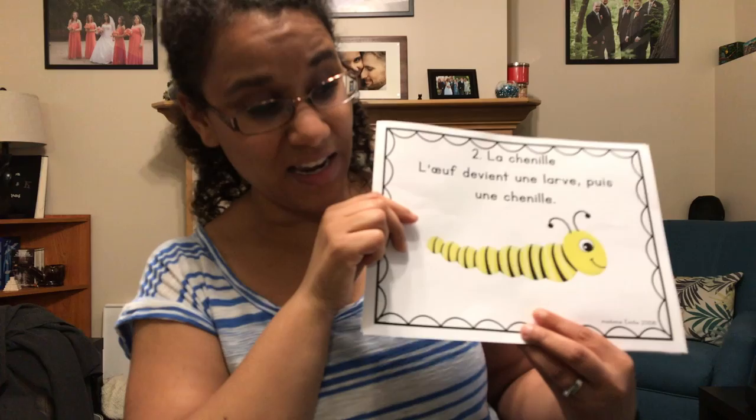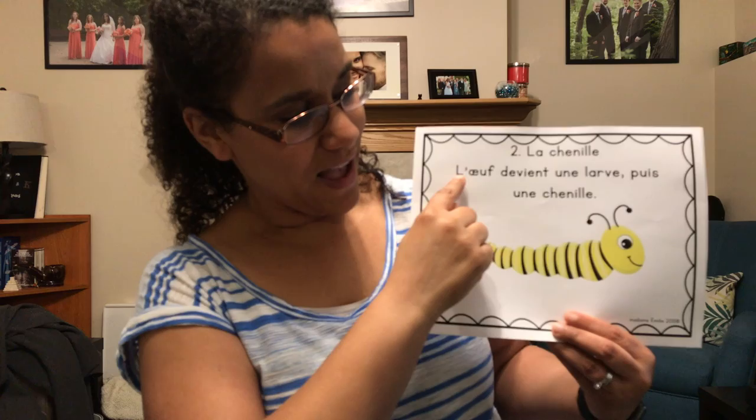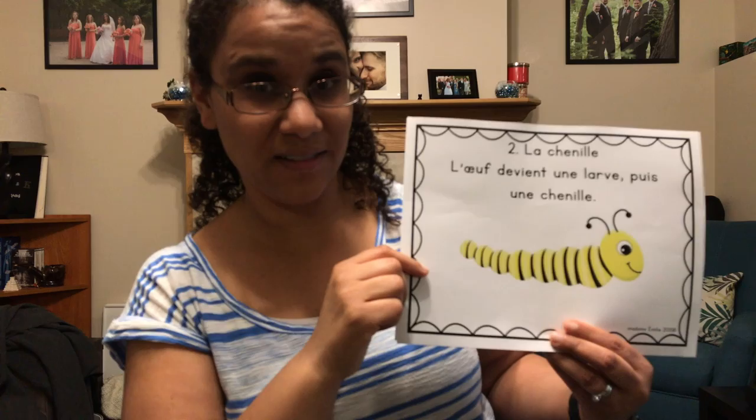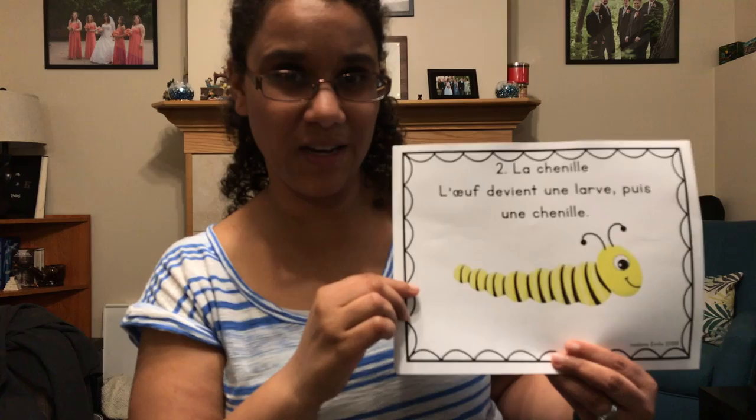Après, les chenilles viennent des œufs. Et les œufs deviennent une larve, puis une chenille. Regarde, c'est une chenille. C'est juste comme nos chenilles, oui? Regardez les antennes, les yeux, et le colon, oui? Juste comme nos chenilles.